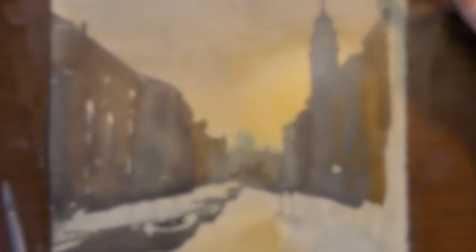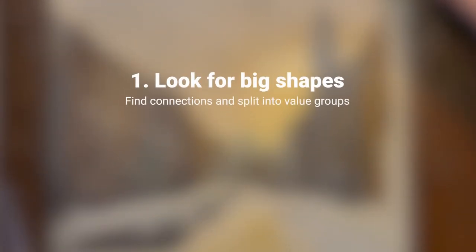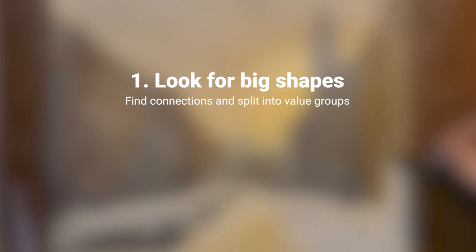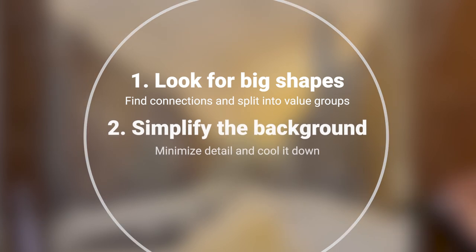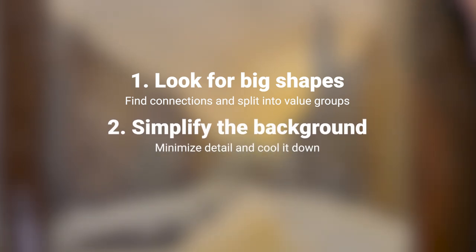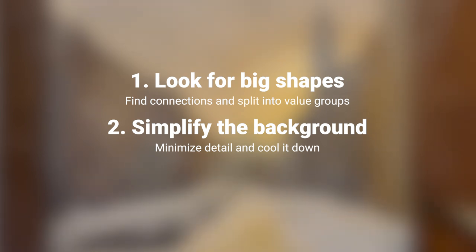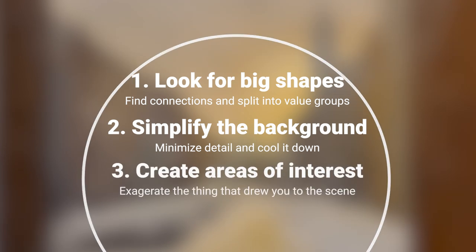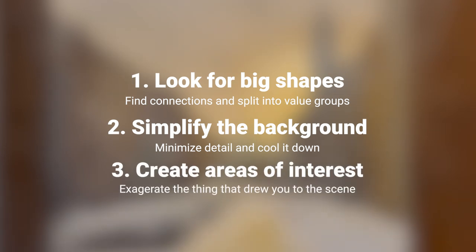Those are my three tips for simplification. Let's recap: First, look for big shapes — find connections in your scene and split those shapes into groups of values. Second, simplify your background: minimize it, desaturate it, cool it down, push it back, and use softer edges to create depth and clarity on what's important. Finally, emphasize your focal areas — emphasize the thing that drew you to the scene in the first place.